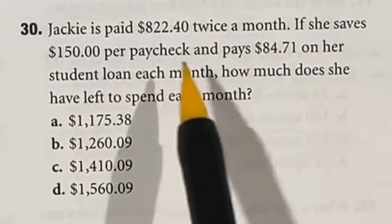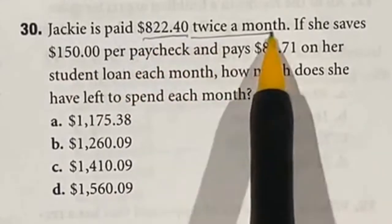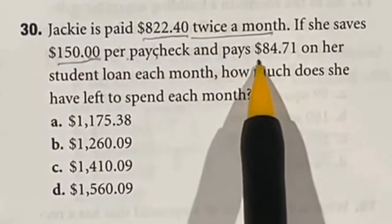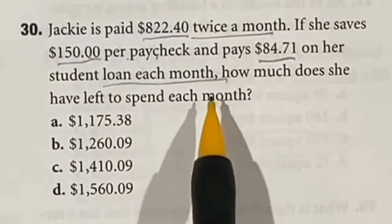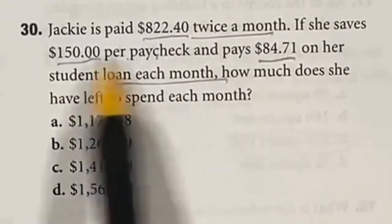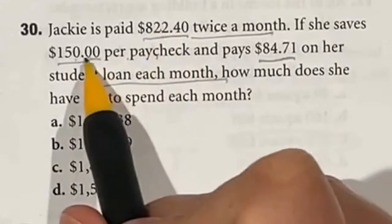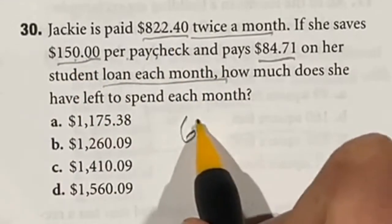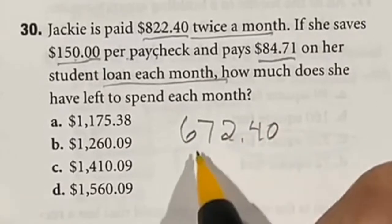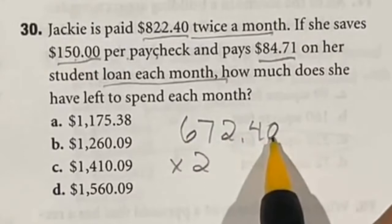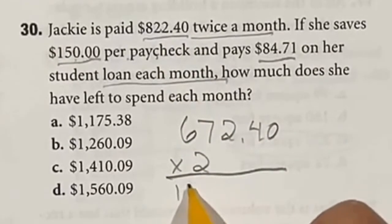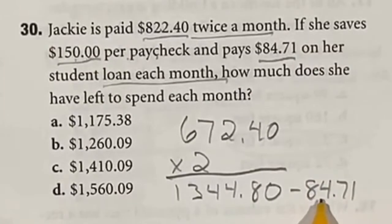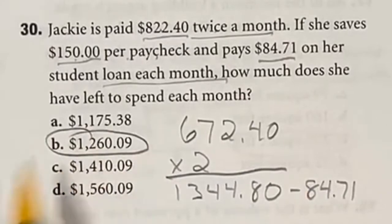The wording for question 30 makes it a little tricky. Jackie is paid $822.40 twice a month and saves $150 per paycheck, also twice a month, but only pays $847.10 once each month. They want to know how much money is left to spend. First, subtract $150 from $822.40 to get $672.40 per paycheck after savings. Multiply by two because she gets that amount twice a month, giving $1,344.80. Subtracting the $847.10 gives a final answer of $1,269.